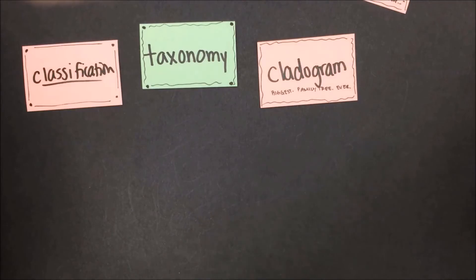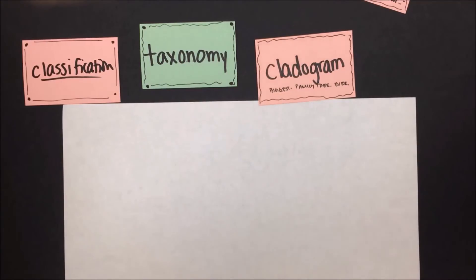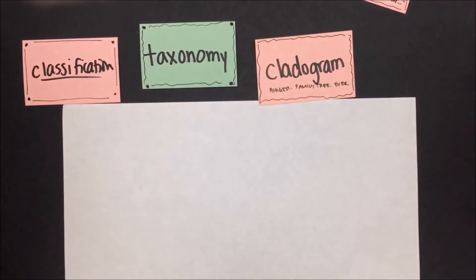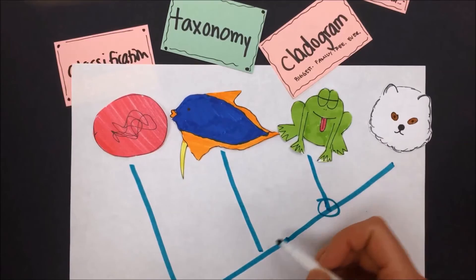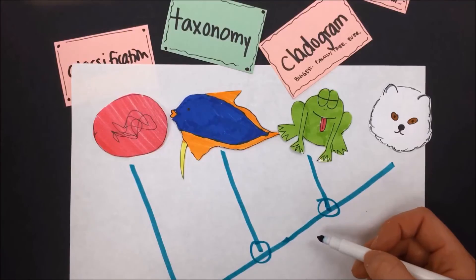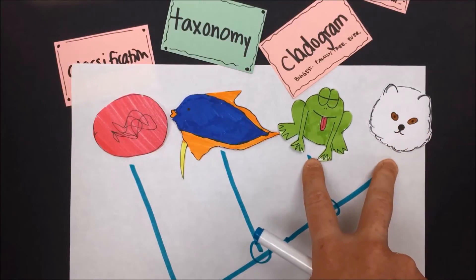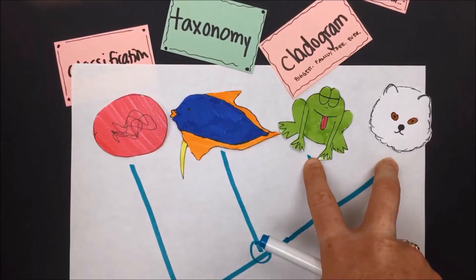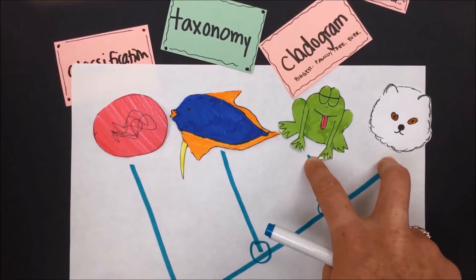Another taxonomy tool is the cladogram. This is like a big family tree showing the recent and not-so-recent evolutionary history and relationship between species of interest. Each vertex on a cladogram represents a common shared extinct ancestor between two species, and the closer together two organisms are on this diagram, the more closely they are related and the more recently they evolved into different species.